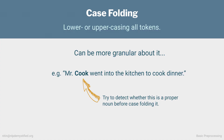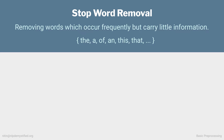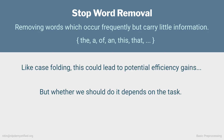Let's look at another preprocessing step: stopword removal. Stopwords are words which occur frequently but rarely carry much information — words such as the, of, and, this, and that. Stopword removal is simply getting rid of such words in our corpus. As with case folding, stopword removal can lead to efficiency gains; we'll reduce the size of our vocabulary, which saves on both memory and computation. So, should we remove stopwords all the time?